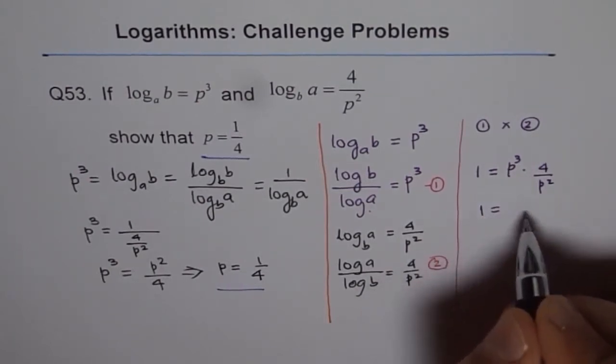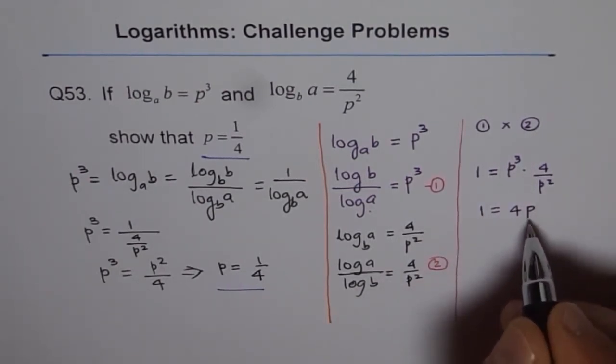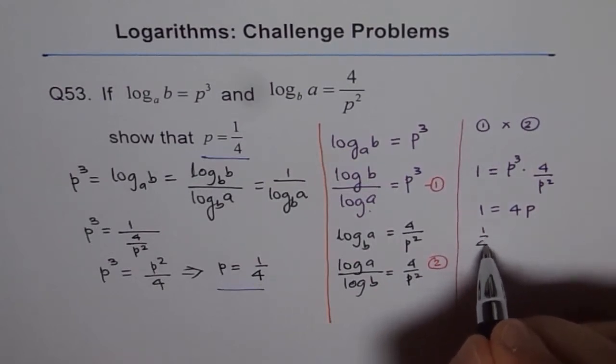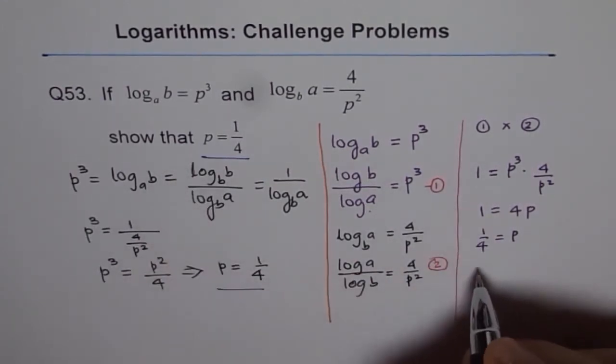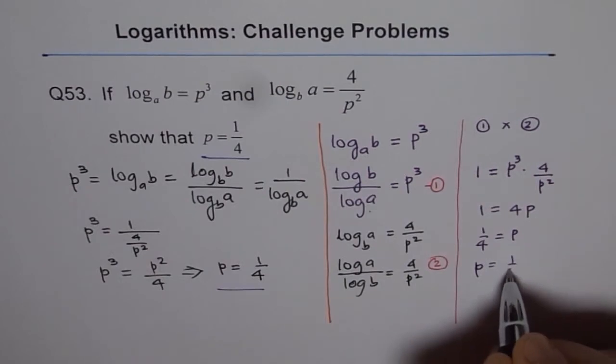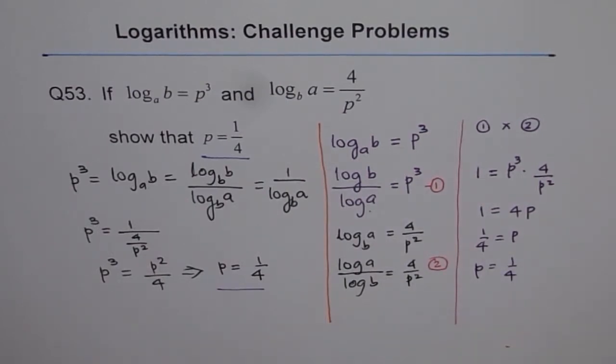That means 1 equals 4P. And from here, I can write 1 over 4 equals P. That is what we wanted, P equals 1 over 4. So that is the alternate way of solving the same equation.